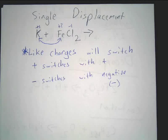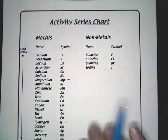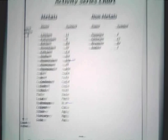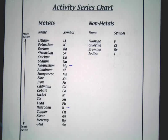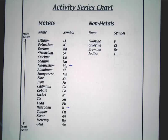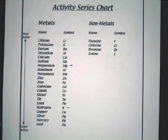You need to look at something called the activity series. The activity series, in a simplified version, tells you how reactive something is. The most reactive thing on this chart is lithium. The least reactive thing is gold.